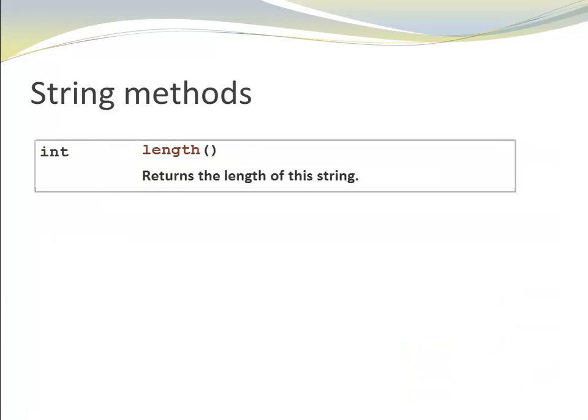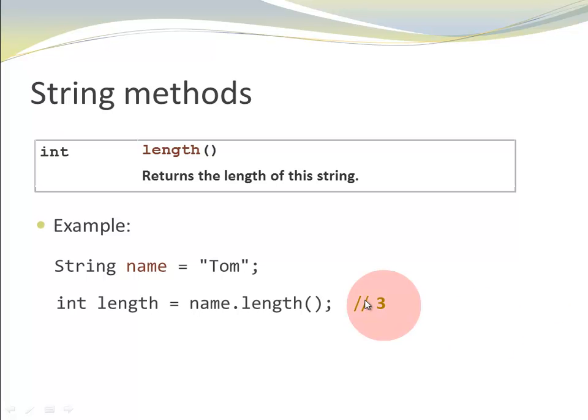Now, let's look at some String methods. One frequently used String method is length. It returns the length of a String. Example, String name gets assigned Tom, integer length is name dot length. Length is called on an instance because it doesn't mention static here. And it returns three because Tom consists of three characters, T-O-M.